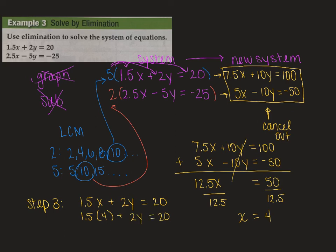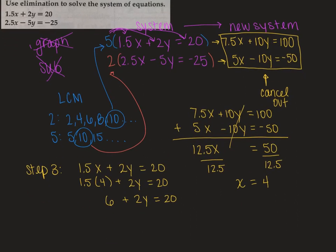1.5 times 4. That's going to give me a 6. So 6 plus 2y equals 20. Subtract your 6. So 2y equals 14. So that leaves y to equal 7. So my total and final answer is going to be 4, 7.